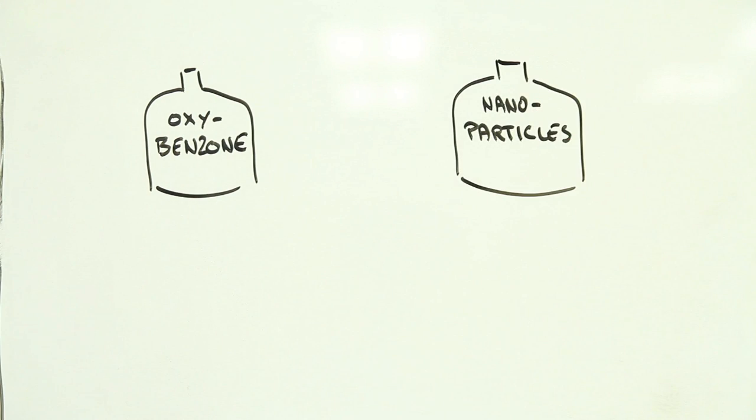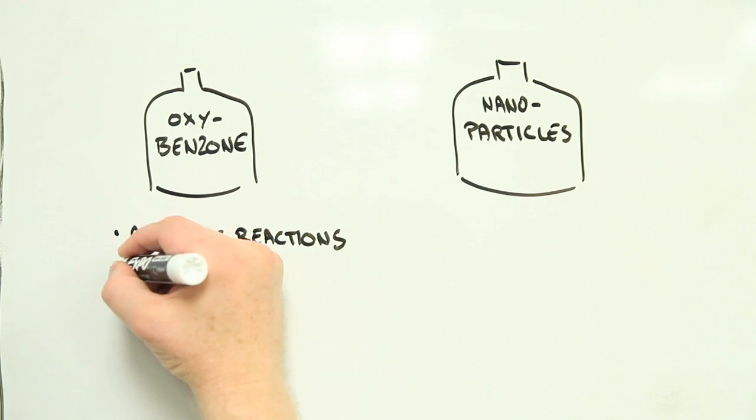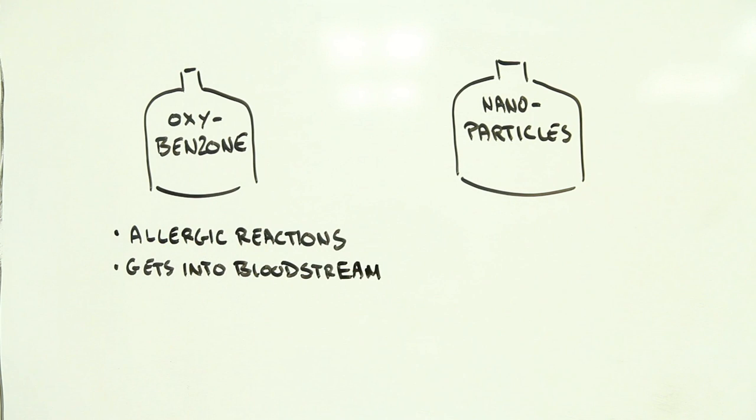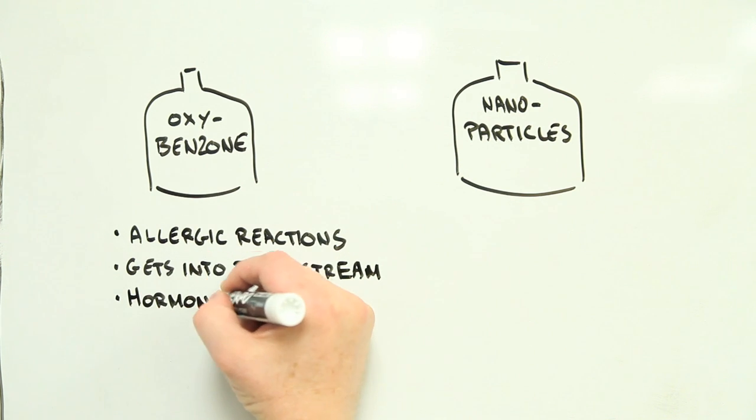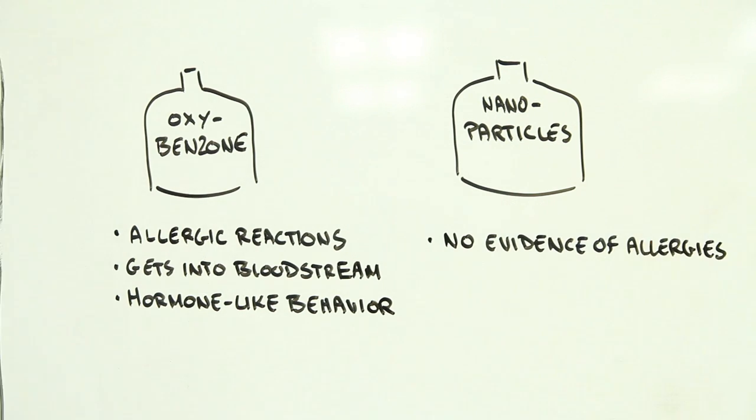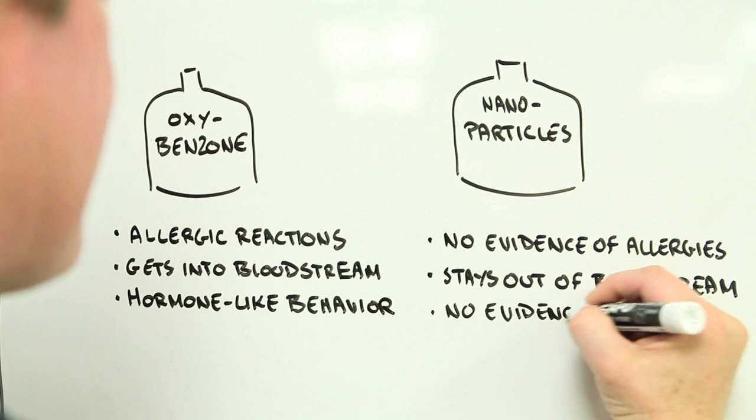Number four: non-nano sunscreens may be more harmful than nano sunscreens according to some research. Conventional ingredients like oxybenzone may lead to allergic reactions with some people, and small quantities can penetrate through your skin and into your body where there's a chance that they may cause problems by behaving like human hormones. In contrast, at this point there is no evidence that nanoparticles behave similarly.